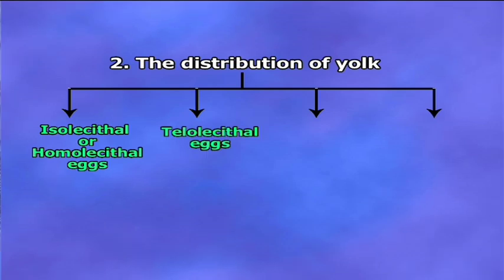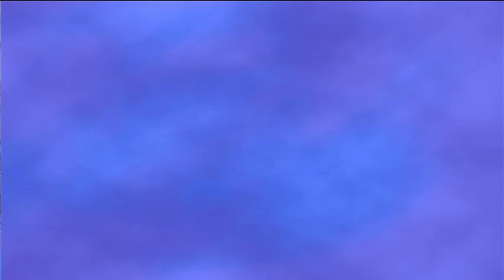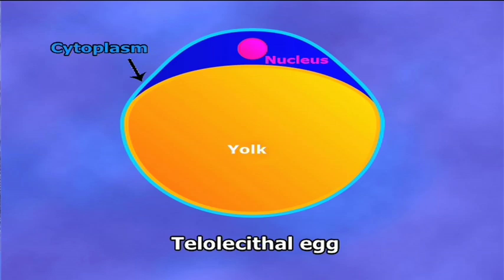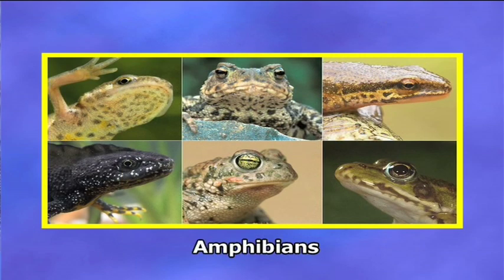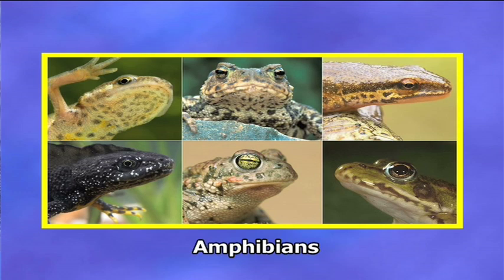Telolacetal eggs: the distribution of yolk is unequal; it is eccentrically concentrated in the vegetal pole, or lower part, of the egg. Examples are annelids, molluscs, and many amphibians.